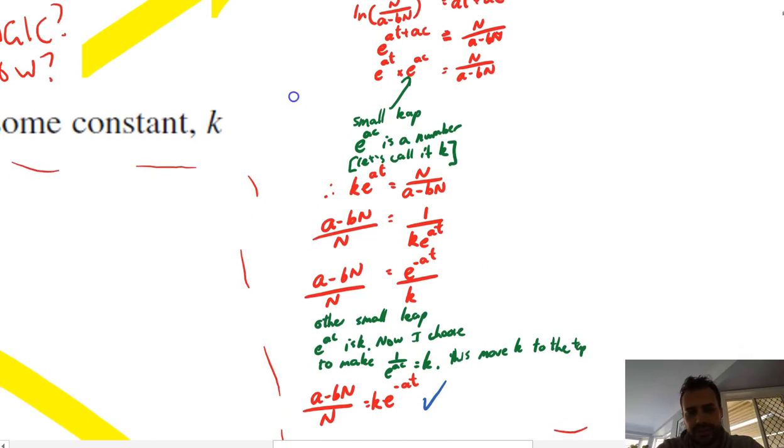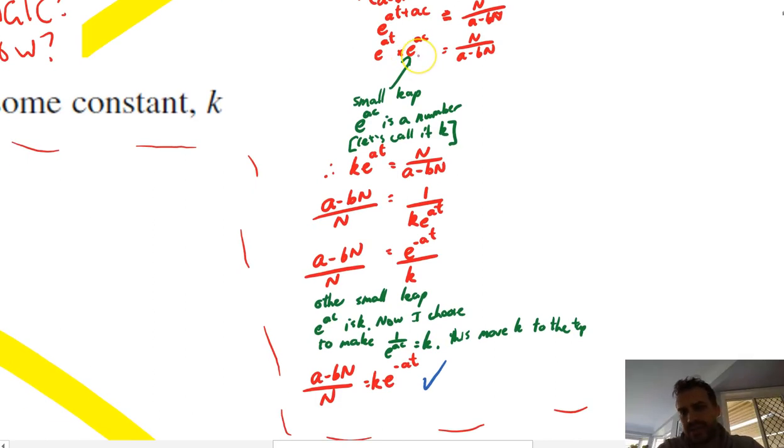And then the small leap. E to the a c is just a number. So we can take that small, that number, and call it k. So now we don't have e to the a c. We just have e to the a t times k. Which looks like that.